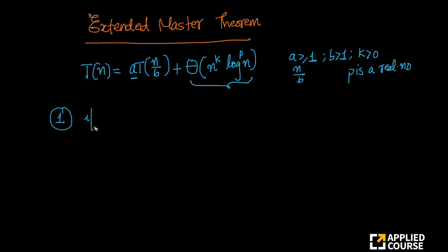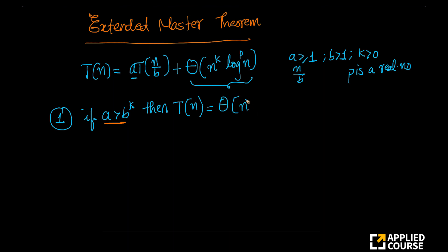Case 1: if A is greater than b^k — you have A, b, and k here — then T(n) equals theta of n^(log_b(a)). So basically, you compare A with b^k, and based on that you have cases. If A is greater than b^k, then T(n) equals theta of n^(log_b(a)).